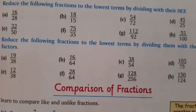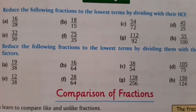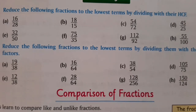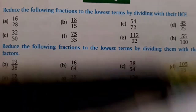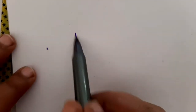Now we will start question number 2: reduce the following fractions to the lowest term by dividing them with the common factors. Here we have to find out the common factors. Let us understand this with the first question. My first fraction is 19 upon 38. I will write 19 upon 38.